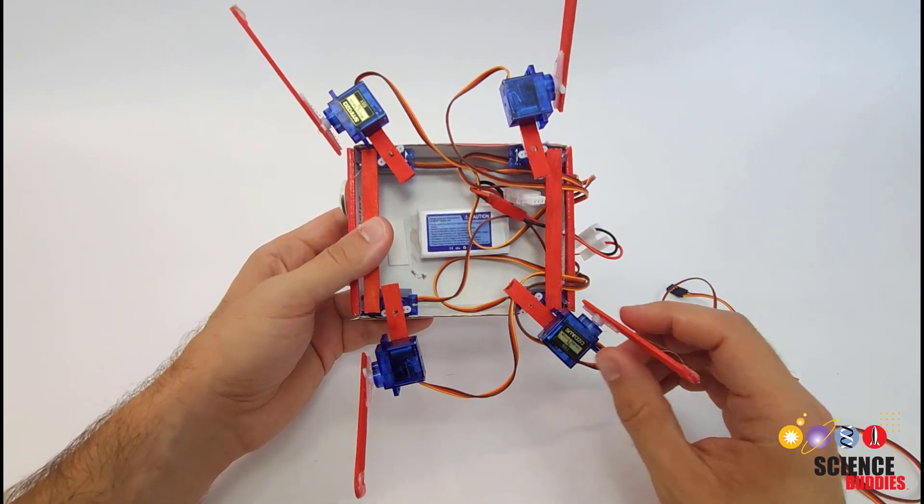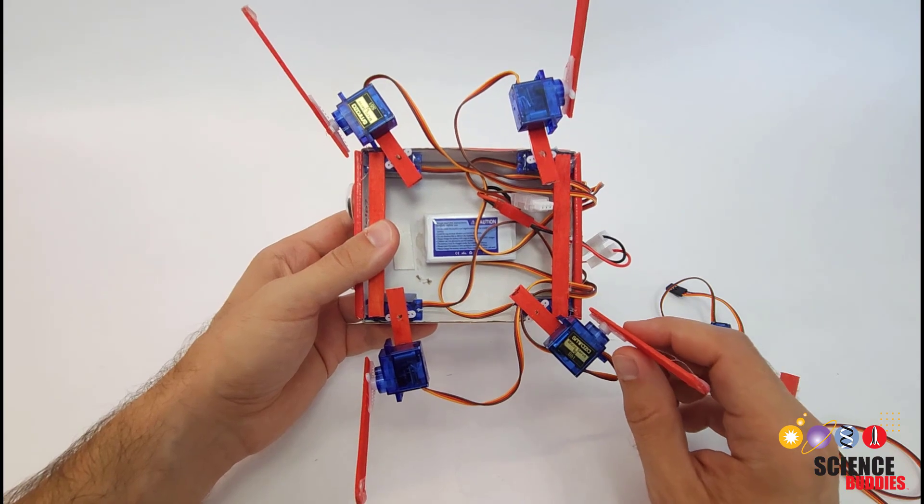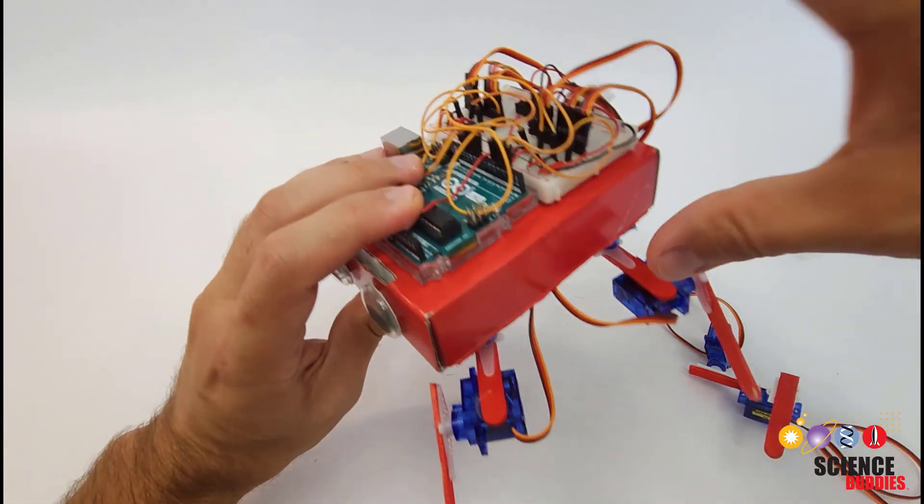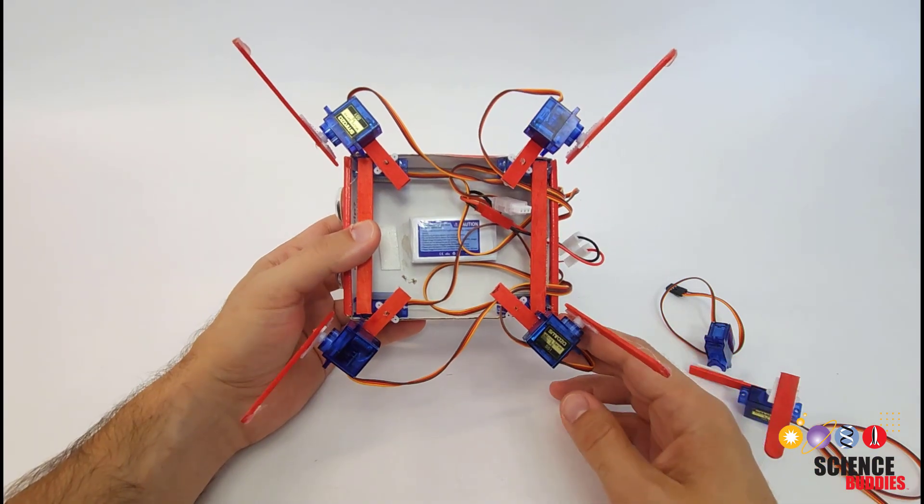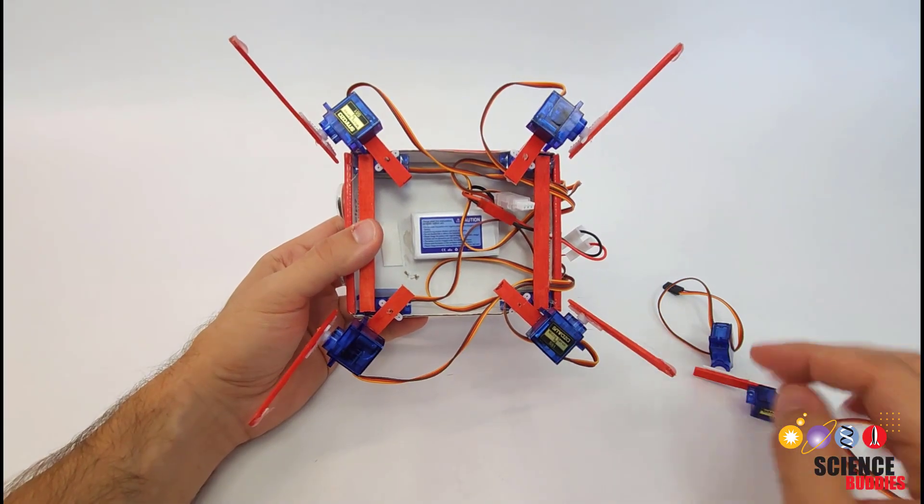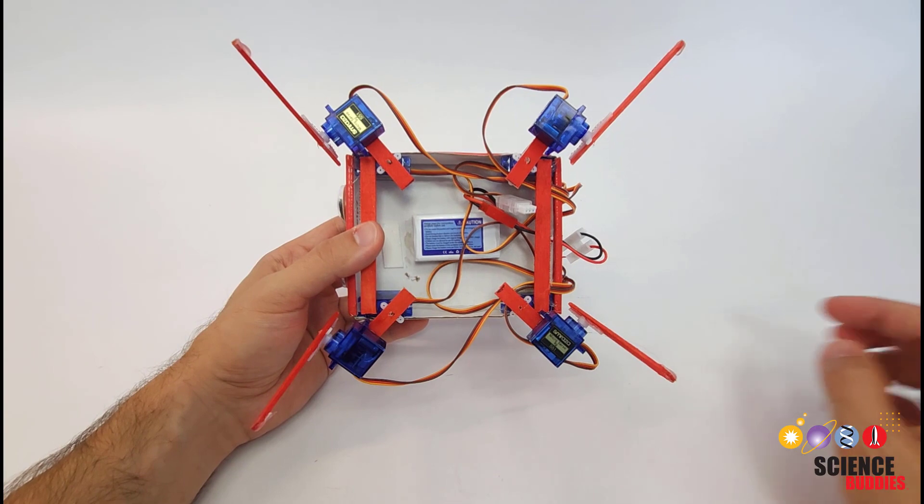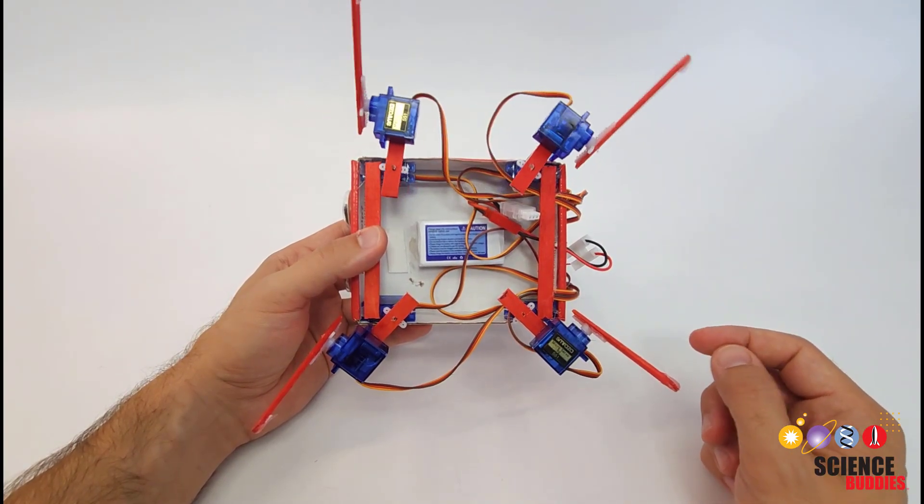The challenging part is programming the gait or the order in which the robot will move its legs and joints to make it walk. And there are many different ways you can program the gait. This is a little easier to visualize if I hold the robot upside down like this so we can watch the legs.